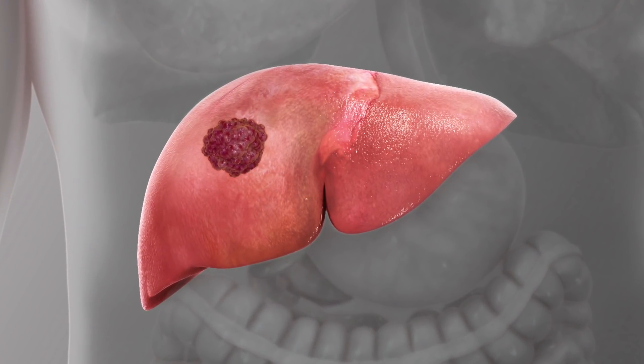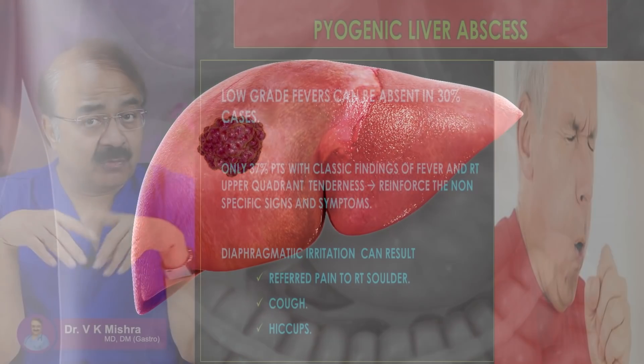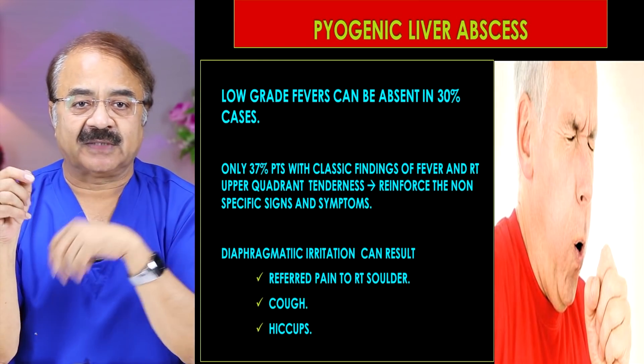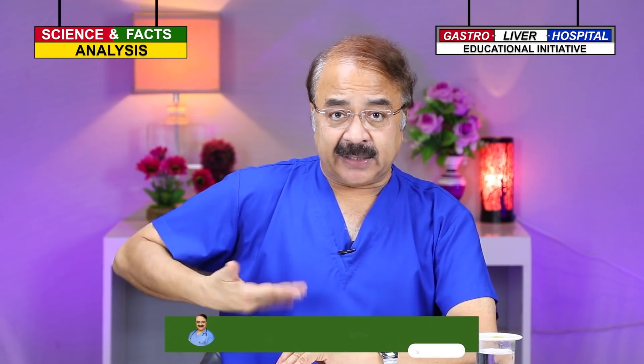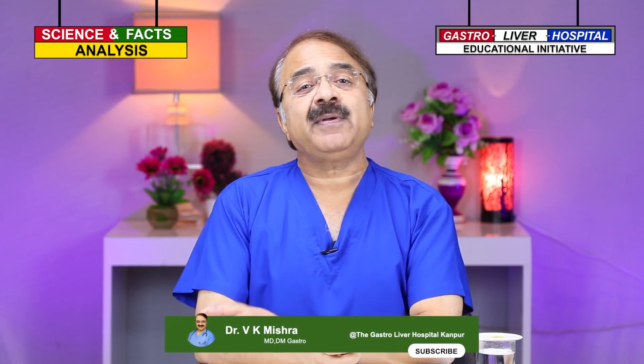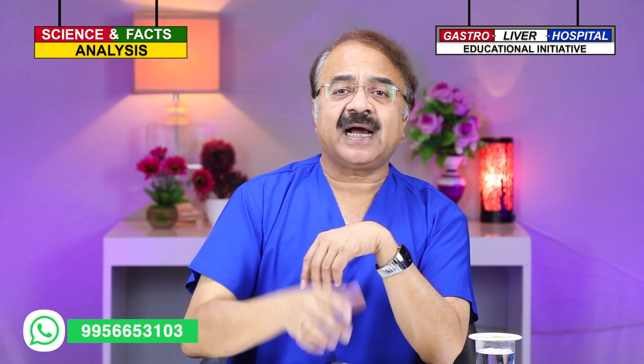If the liver abscess irritates the right-side diaphragm, then shoulder pain will occur, hiccups will come, and coughing may begin — all because of diaphragmatic irritation. So if the diaphragm is irritated, you will get shoulder pain, hiccups, and coughing.